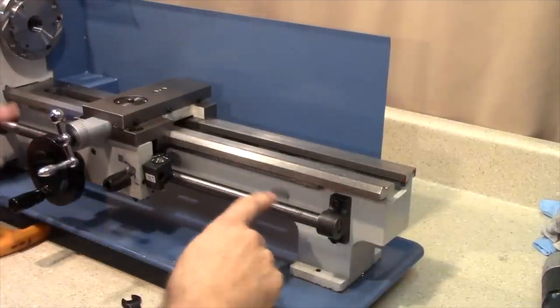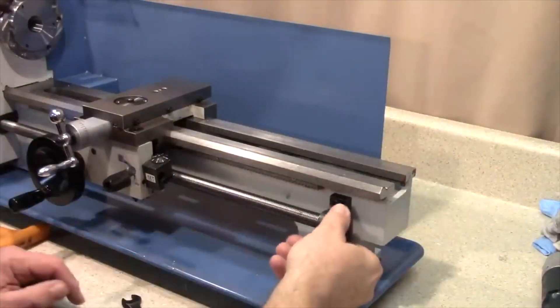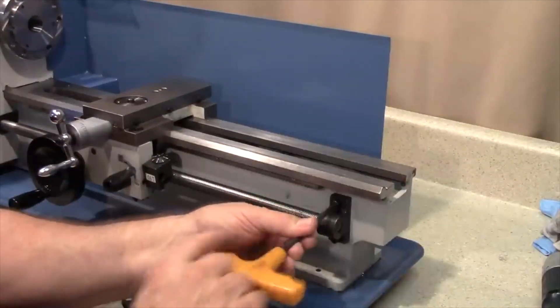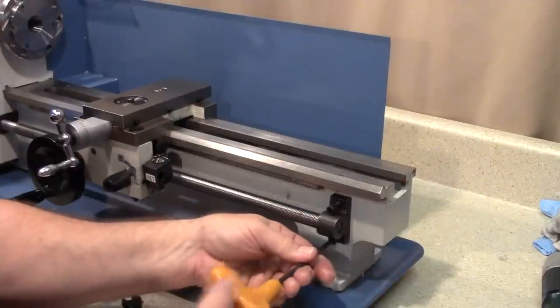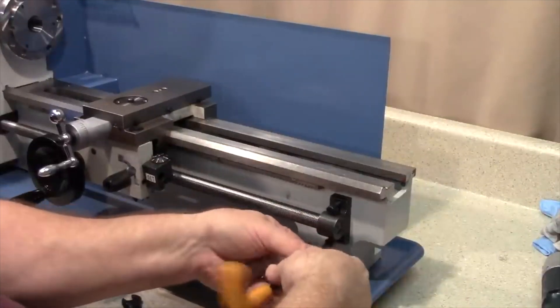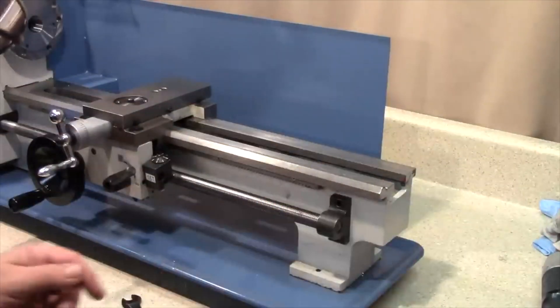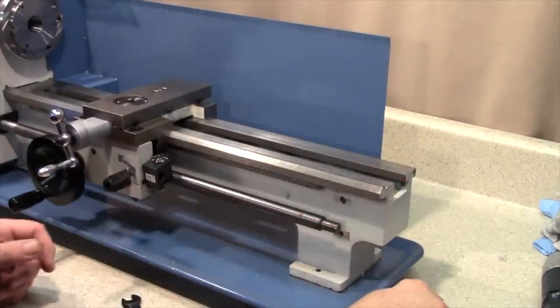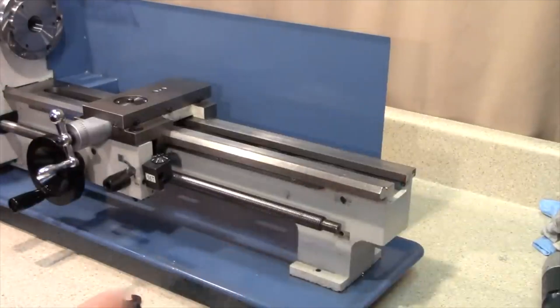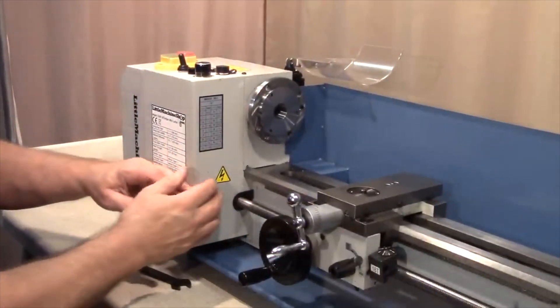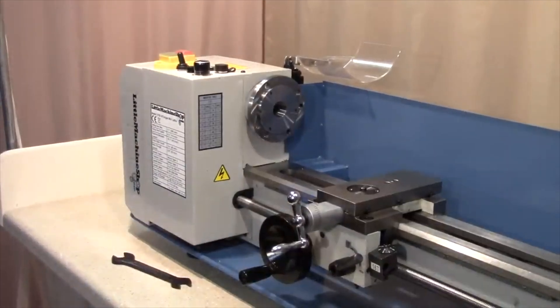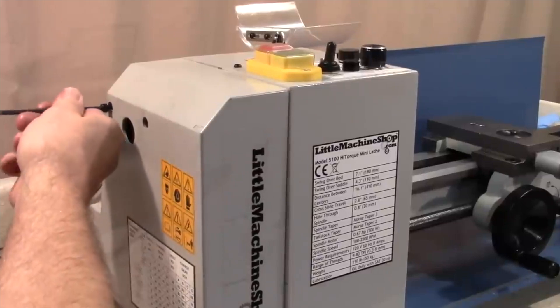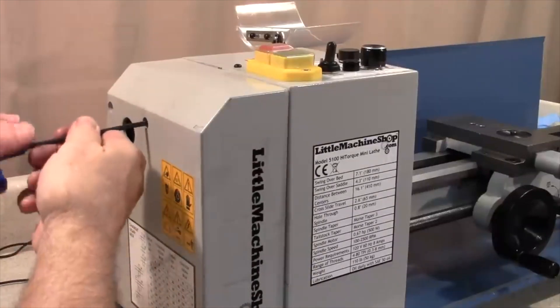Next we're going to remove the lead screw. In order to do that we have to remove this pillow block or bushing here so that the lead screw can be moved out of position. That has two 5mm socket head cap screws. The lead screw goes all the way through the electronic control box and comes out here on the other side where the gears are, so we'll need to remove the gear cover and access that area.